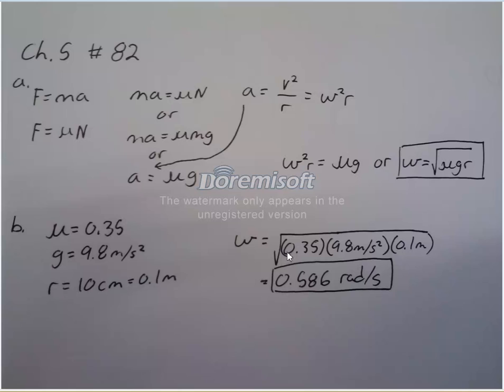So it gives us the coefficient, we know gravity, and it gives us the radius, which we convert to meters. Plug it in, and we get an angular speed of 0.586 radians per second.